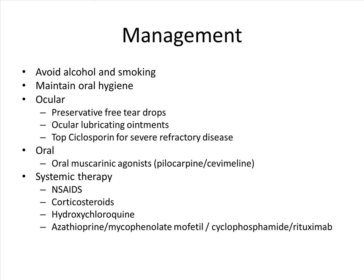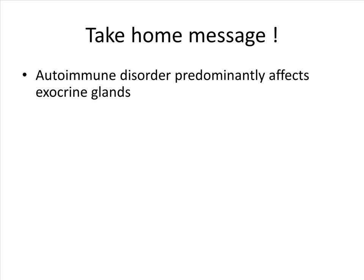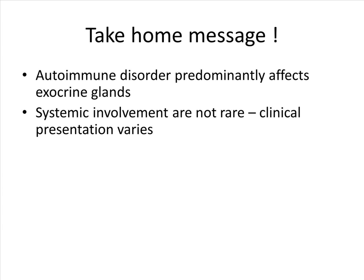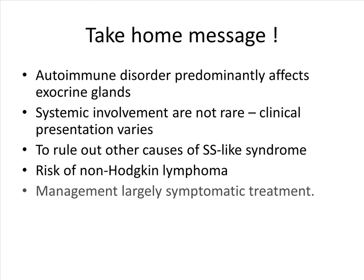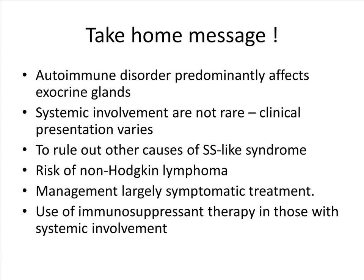The take-home message is that Sjogren's syndrome is an autoimmune disorder that predominantly affects exocrine glands. Systemic involvement is not rare and clinical presentation varies. It is important to rule out other causes of Sjogren-like syndrome before making a diagnosis. Patients with Sjogren's syndrome have a risk of non-Hodgkin lymphoma. Management is largely symptomatic treatment, and immunosuppressant therapy is used in those with systemic involvement.